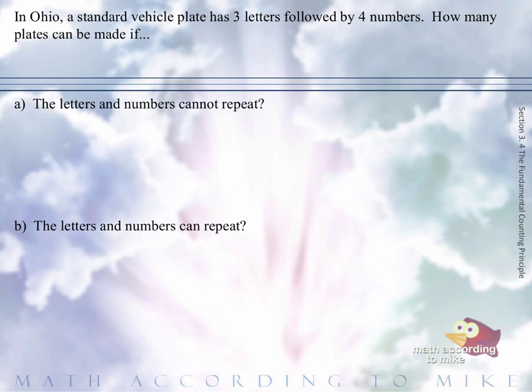The letters and numbers cannot repeat. So here's our three letters. Here's our four numbers. Remember, there are 26 letters in the English alphabet, and there are 10 one-digit numbers, 0 through 9.